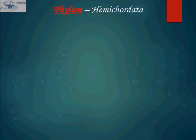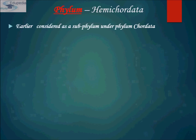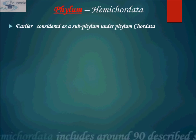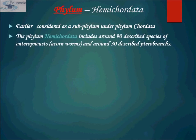Hemichordata is a small, unusual phylum. Earlier it was considered as a sub-phylum under Phylum Chordata. They are worm-like creatures that are closely related to Phylum Chordata and Echinodermata. They vary widely in size, from eight feet in length for a corn worm to one millimeter length for pterobranches.